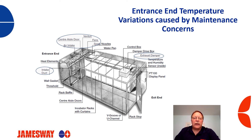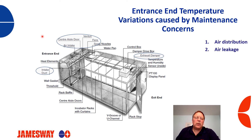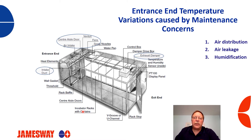What are some maintenance issues that could cause issues with our entrance end temperatures? Air distribution — we want to make sure our openings and air intakes are open properly. Air leakage around the walls at position one, through the entrance or exit doors. Humidification — if the humidity nozzles are spraying too coarse, creating a cooling effect on the lower end, that could be creating some issues. Calibration could also be off, causing some of these improper temperature readings.